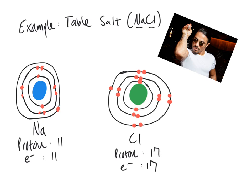Electrons swirl around atoms in what's called an orbital — drawn here as circles around the center of the atom, which holds the protons and neutrons. The first is the S orbital, which holds a maximum of two electrons, which is why you see two electrons in both sodium and chlorine there. The next is the P orbital, which holds eight — and in both sodium and chlorine that P orbital is full. Beyond the P orbital is the D orbital, which also holds a maximum of eight electrons.